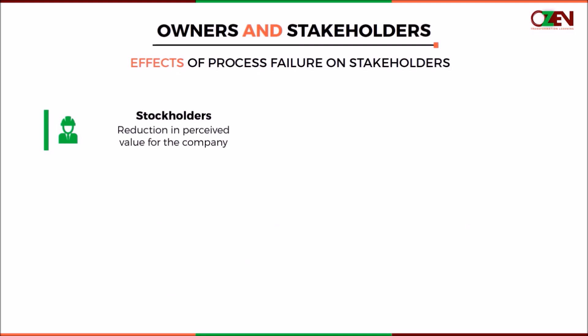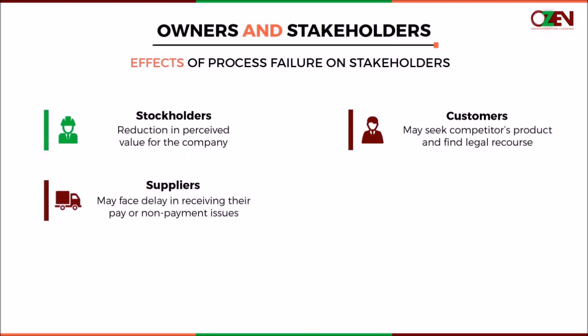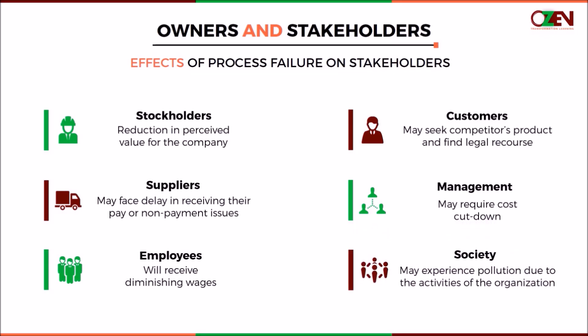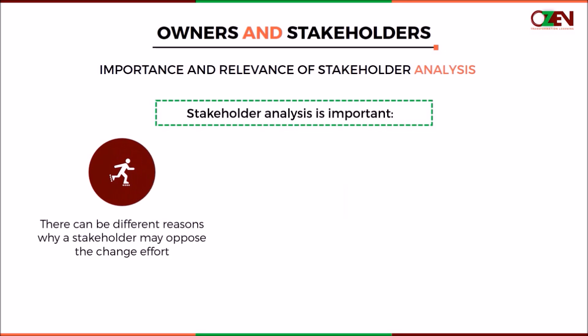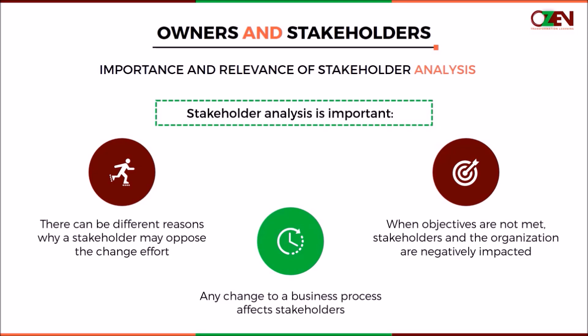It is important to know the effects of process failures on stakeholders. Failure to meet one or more process objectives may result in negative effects, such as: stakeholders perceiving reduction in value for the company; customers seeking competitors' products and finding legal recourse; suppliers facing delays in receiving pay or non-payment issues; management requiring cost cutdowns; employees receiving diminishing wages; and society experiencing pollution due to the organization's activities. Stakeholder analysis is an important task before doing a Six Sigma project. A business has many stakeholders, and any change to a business process affects some or all of them. The Six Sigma team must factor in the reasons why a stakeholder may oppose the change effort.